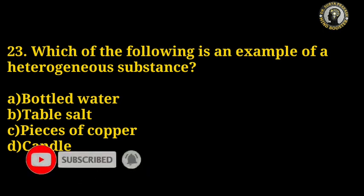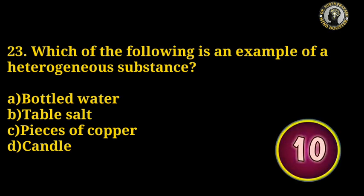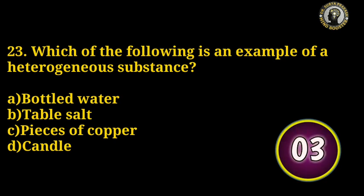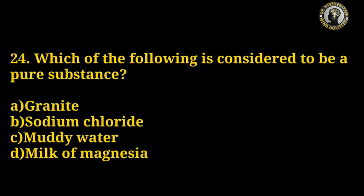Question number 23: Which of the following is an example of a heterogeneous substance? Options: bottled water, tablet, sword, pieces of copper, candle. The right answer is D — candle.